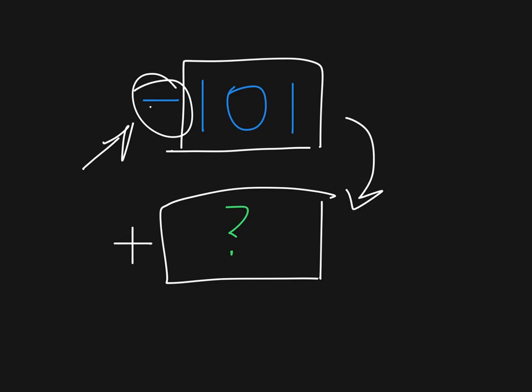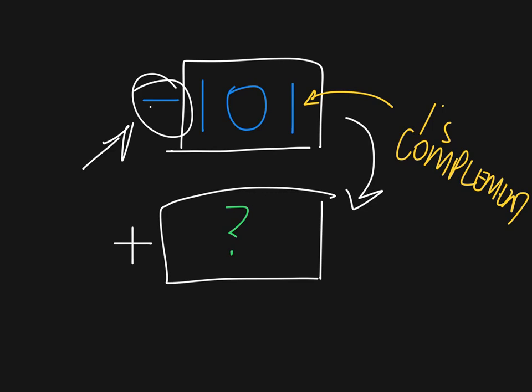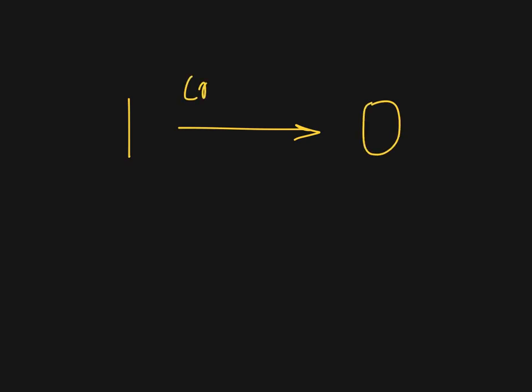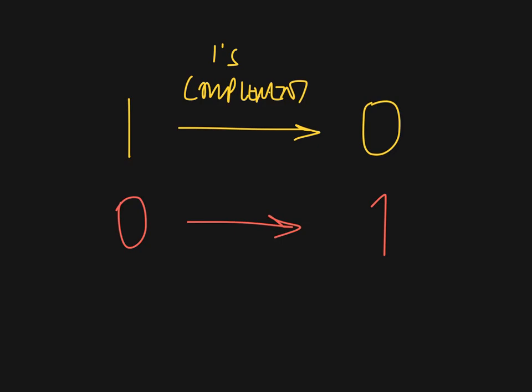So what do we actually do? We find the one's complement of the number. The one's complement of a binary digit — say it's a one, its complement is zero. And a zero, its one's complement is one. That's the concept, so let's practise it.